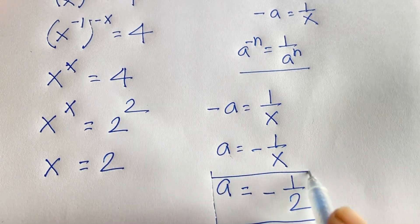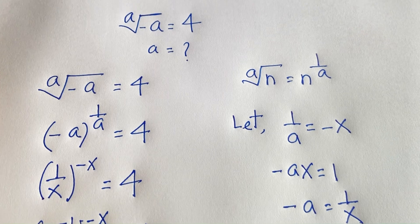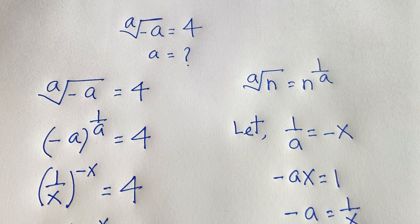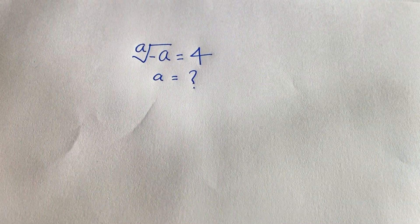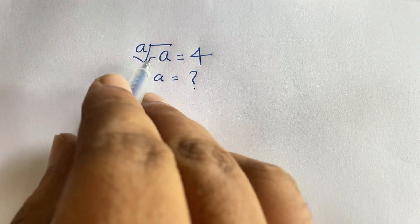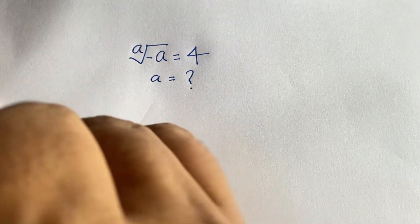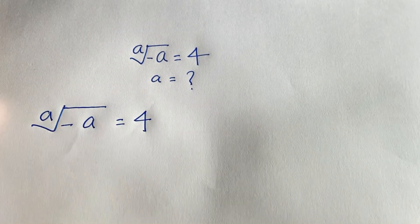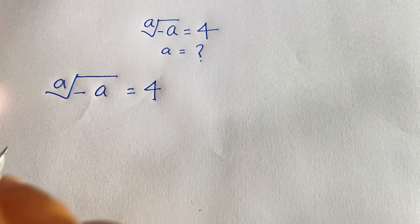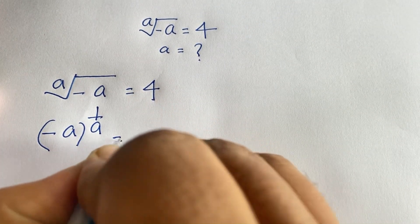This is our final answer using the first method. Now I will solve the same question using the Lambert W function. Our question is: a root of minus a equals 4, which we rewrite as minus a, whole to the power 1 over a, equals 4.